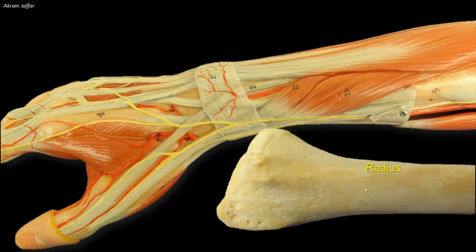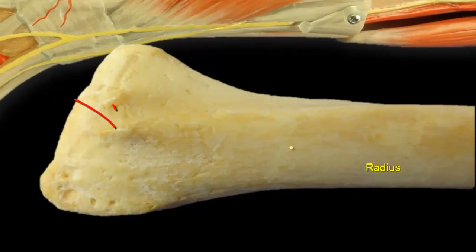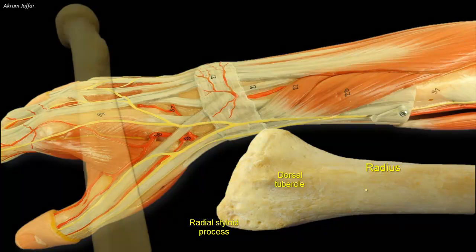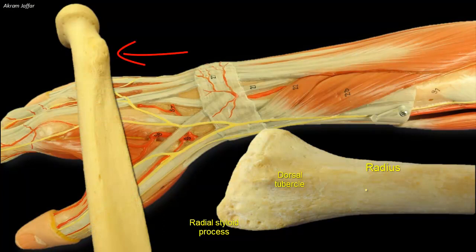The posterior surface of the radius at its distal end is characterized by the presence of a prominent dorsal tubercle, or Lister's tubercle. This tubercle can be palpated around the middle of the dorsal aspect of the radius. The prominence is small, hence the name tubercle, in contrast to the bigger tuberosity at the proximal end of the bone, with which the name should not be confused.